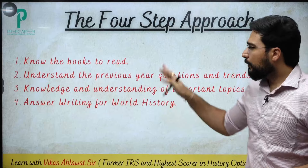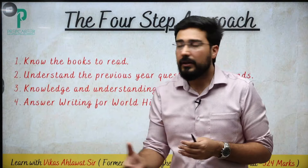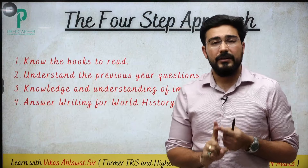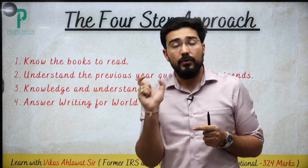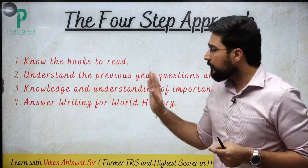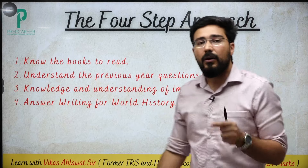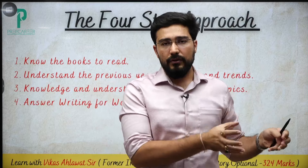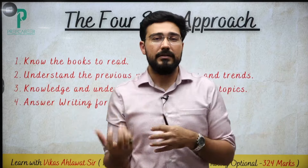The approach we follow is very straightforward — a four-step approach. Number one: know the read — the specific book and specific part you have to read. Don't read all books and all chapters; that is not required. Second: understand the PYQs as well as the trends of those PYQs. For example, the French Revolution, Napoleon, American Revolution, American Civil War — these are going to be our priorities.